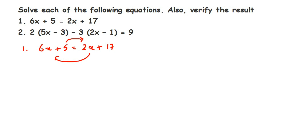When transposing, the signs will change — plus becomes minus, minus becomes plus. So we get 6x. When we transpose 2x to the other side, its sign changes from positive to negative: 6x minus 2x. On the right side we have 17, and transposing 5 gives us minus 5, so 17 minus 5. That gives us 4x = 12.